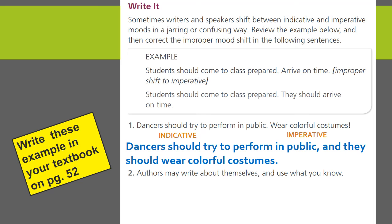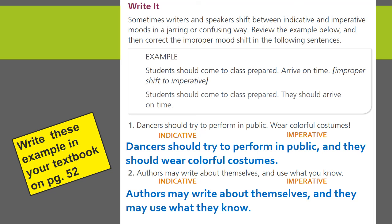Number two: 'Authors may write about themselves and use what you know.' The first part is indicative, and the second part is imperative. We want both parts of the sentence to be in the indicative voice. Rewritten, the sentence reads: 'Authors may write about themselves and they may use what they know.'